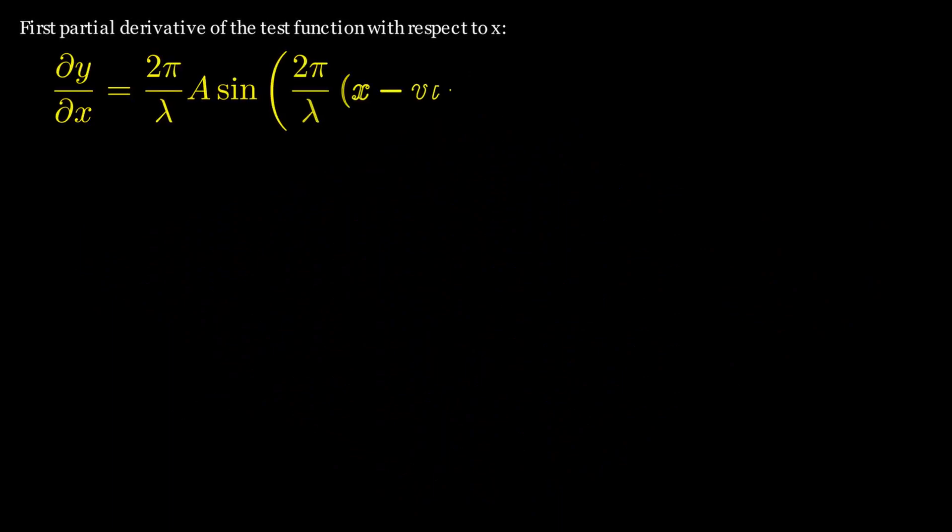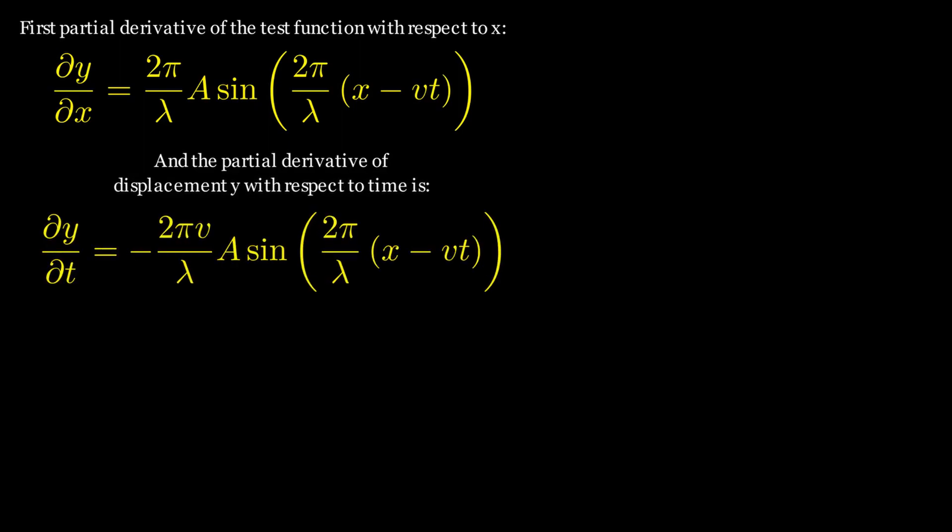Returning to our trial function from which we want to derive the wave equation, we get the following when we take the first partial derivative of the test function with respect to x. In addition, the partial derivative of displacement y with respect to time is given by the following.